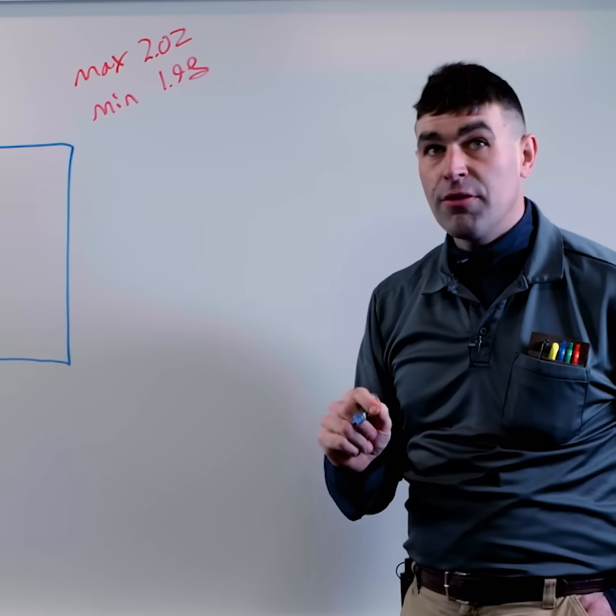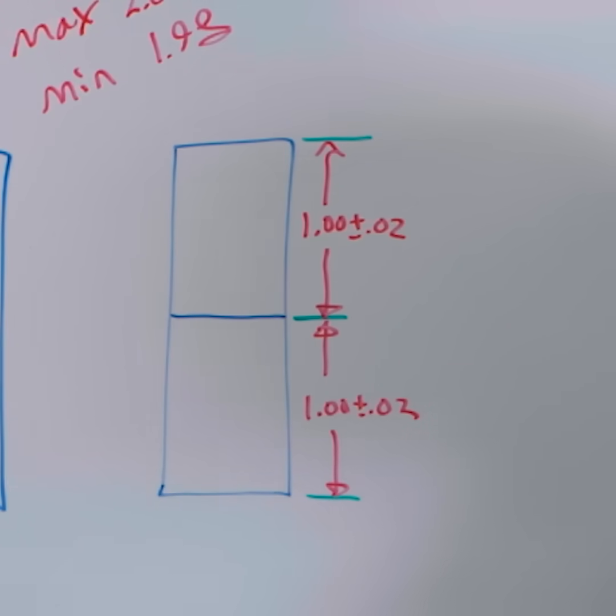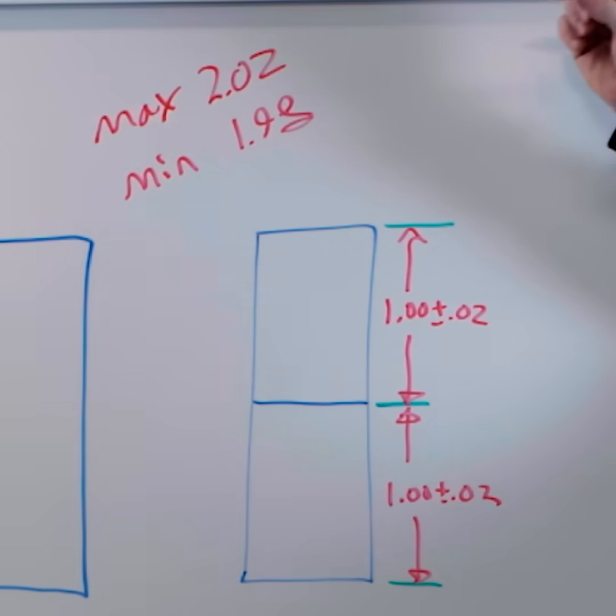Now what happens if we have more than one part and we use the same tolerance? Because of tolerance stack up, we're going to go past our maximum.